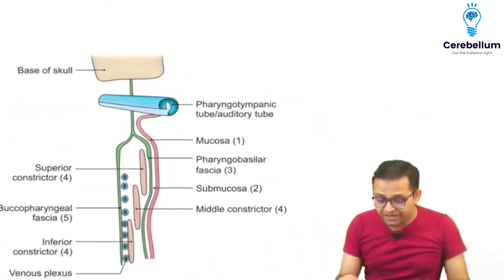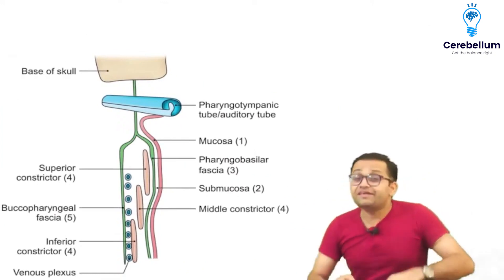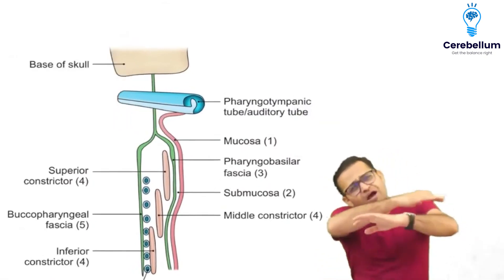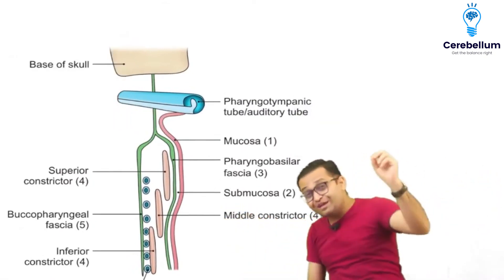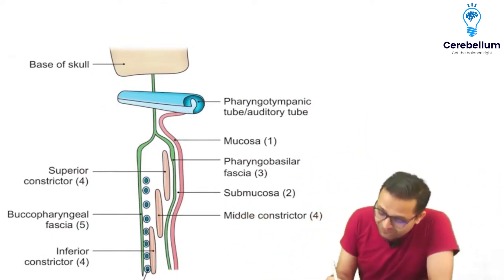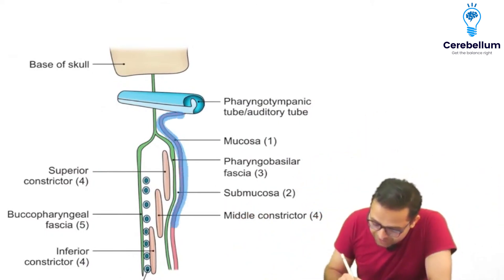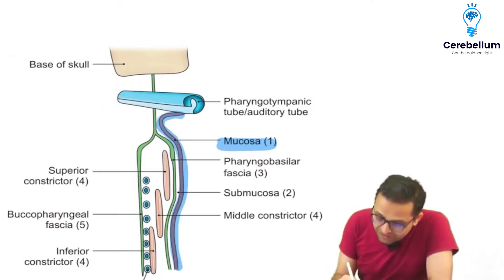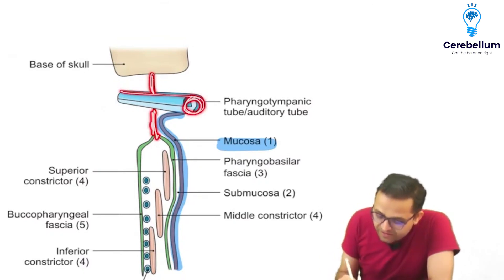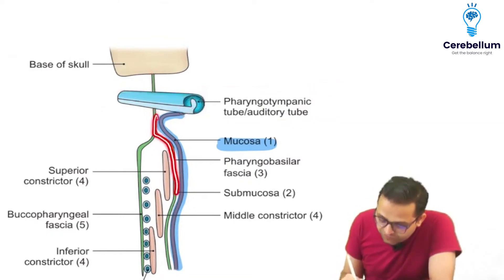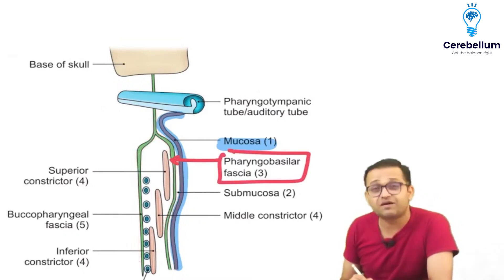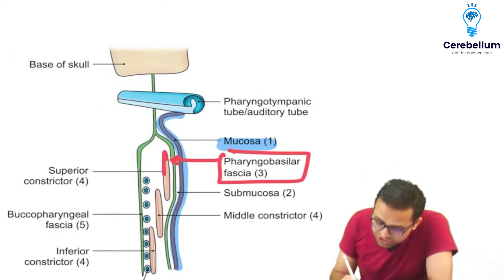In any textbook — BD Chaurasia, Vishram Singh — you will observe the layers of the pharynx. Let's revise them together. The first layer is the mucosa. The second layer is the fascia. You can see the auditory tube is present between the first and second layers, piercing through. This particular layer is the pharyngobasilar fascia.